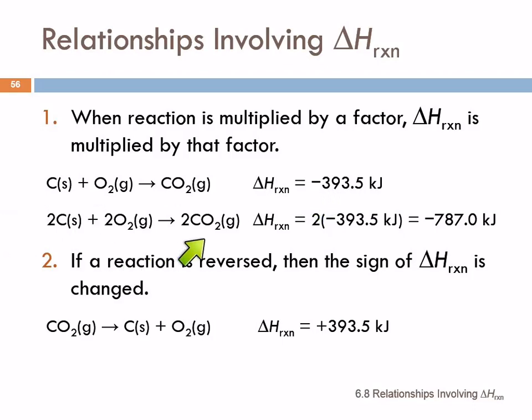If we double the coefficients on this reaction, if we multiply the reaction by 2, now we have twice as much carbon. It makes sense that you're going to release twice as much energy. So you multiply the reaction by 2, you have to multiply ΔH by 2. So we end up with minus 787 kilojoules.